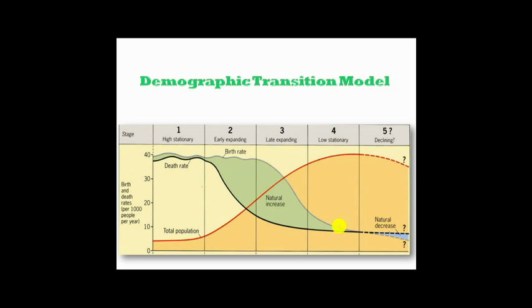The last stage is Stage Five, the Declining stage — though many people question whether this stage exists. Here, the birth rate falls below the death rate, resulting in no natural increase. In fact, this is known as natural decrease, a negative natural increase and negative growth rate. The population size starts falling due to this negative growth rate. Some East European countries like Germany and Hungary are in this phase and are now focusing on immigration to fill their jobs.